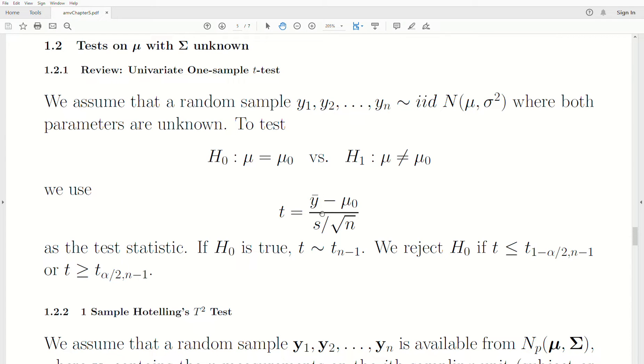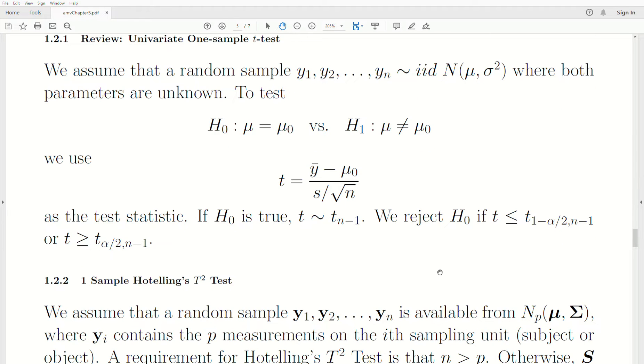This test statistic follows a t-distribution with n minus 1 degrees of freedom. We have a sample size of n, and we reject if t is too small or too big. It's a t-sub alpha over 2 with n minus 1 degrees of freedom, and the other tail is the t-sub 1 minus alpha over 2 with n minus 1 degrees of freedom. This is just a standard univariate test.